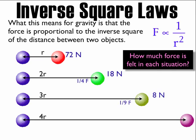For three times farther away, it's the inverse of 3 squared, so it's one-ninth the force. One-ninth times the original force - one-ninth times 72 N - which is 8 N.